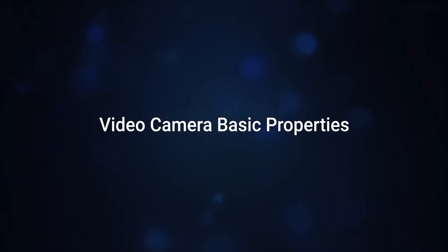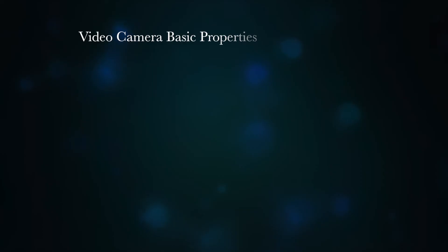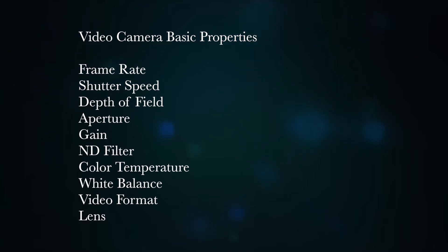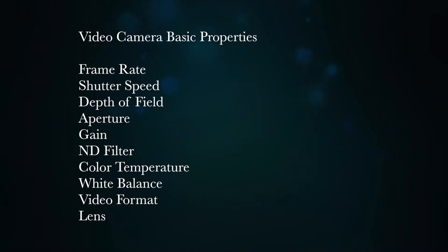Video camera basic properties. Here are some basic properties that we need to know: frame rate, shutter speed, depth of field, aperture, gain, ND filter, color temperature, white balance, video format, and lens.